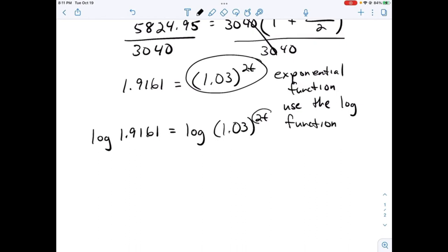If we do the log of 1.9161, we get 0.2824. I'm using four significant figures. The 2t comes down, and the log of 1.03 gives us 0.0128.